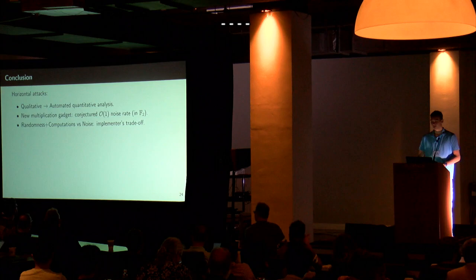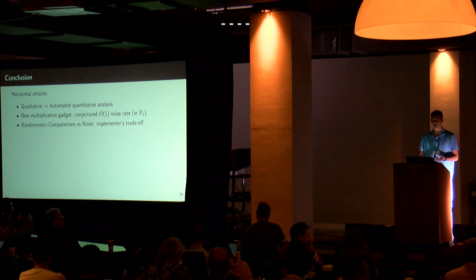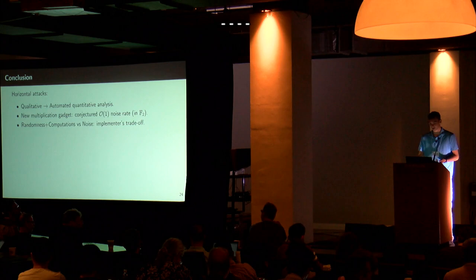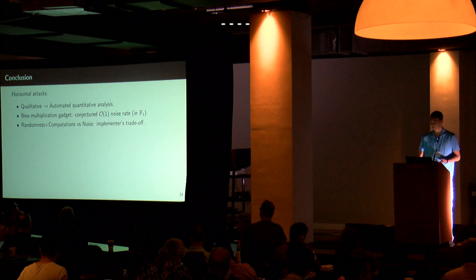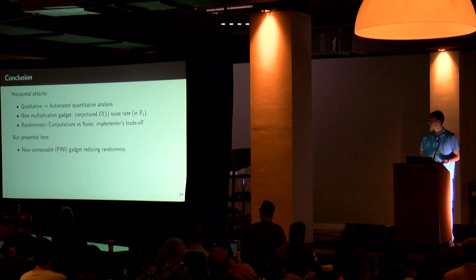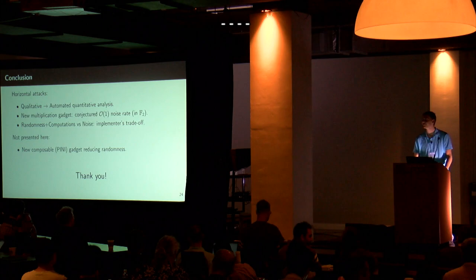In conclusion, we analyzed horizontal attacks for masking schemes, going from qualitative to quantitative analysis, which gives good insights for designing multiplication gadgets. This yields a new gadget we think is quite relevant. We also show the trade-off between noise and randomness/computations for implementers. There is also another part of the paper about composing gadgets using the Pini property and reducing randomness for those security levels, which I did not present today.